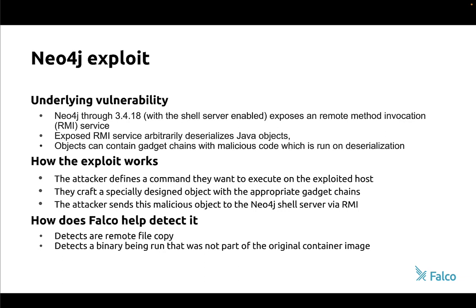What you're going to see from Falco is that we don't tell you you're running the wrong version of Neo4j. What we tell you is: hey, somebody copied a file up here that they probably shouldn't, and there's a binary running now that was not in the base image. This has been fixed in later versions — it's a known exploit — but there is a defense against it. I'm not showing you anything that hasn't been out for a while without easy fixes available.